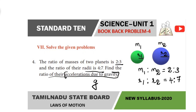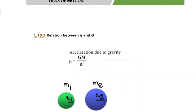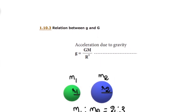Very simple problem. In this problem, you will know the formula relevant to this problem. In the textbook, chapter 1.10.3 is the relation between small g and capital G. This is a theoretical concept. If you learn that topic, you will know the formula. G is constant.